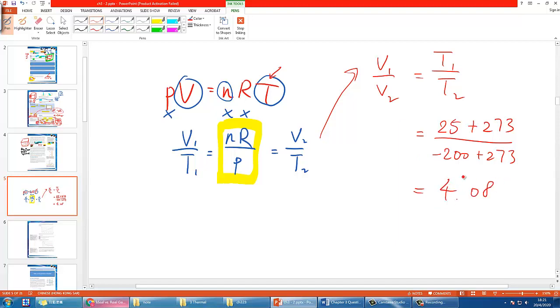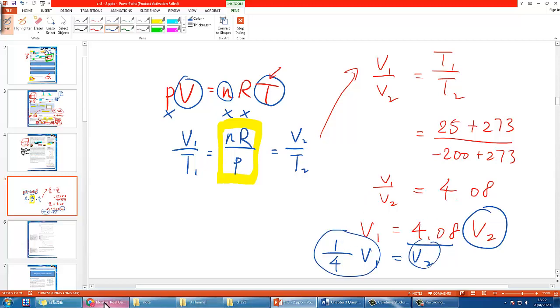Then you can get the calculation using your calculator so it will be around 4.08 for V1 over V2. So that means V1 will equal around 4.08 V2. In other words it will be around four times originally and now you become a quarter. So V2 the new volume will be around a quarter of the original.